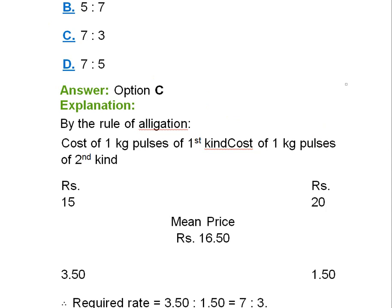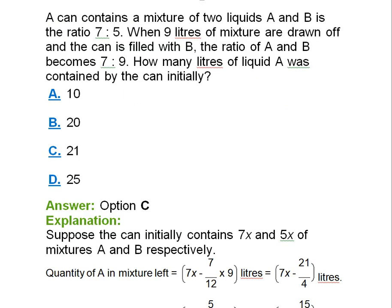A can contains a mixture of two liquids A and B in the ratio 7:5. When 9 liters of the mixture are drawn off and the can is filled with B, the ratio of A and B becomes 7:9. How many liters of liquid A was contained by the can initially?